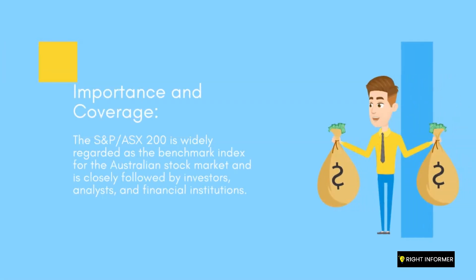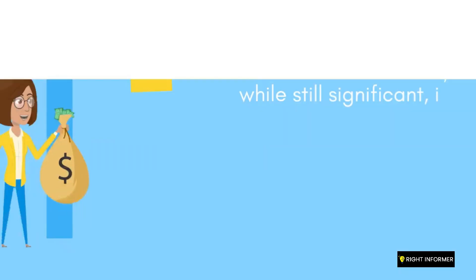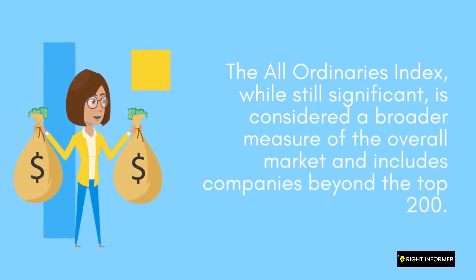Importance and Coverage: The S&P/ASX 200 is widely regarded as the benchmark index for the Australian stock market and is closely followed by investors, analysts, and financial institutions. The All Ordinaries Index, while still significant, is considered a broader measure of the overall market and includes companies beyond the top 200.